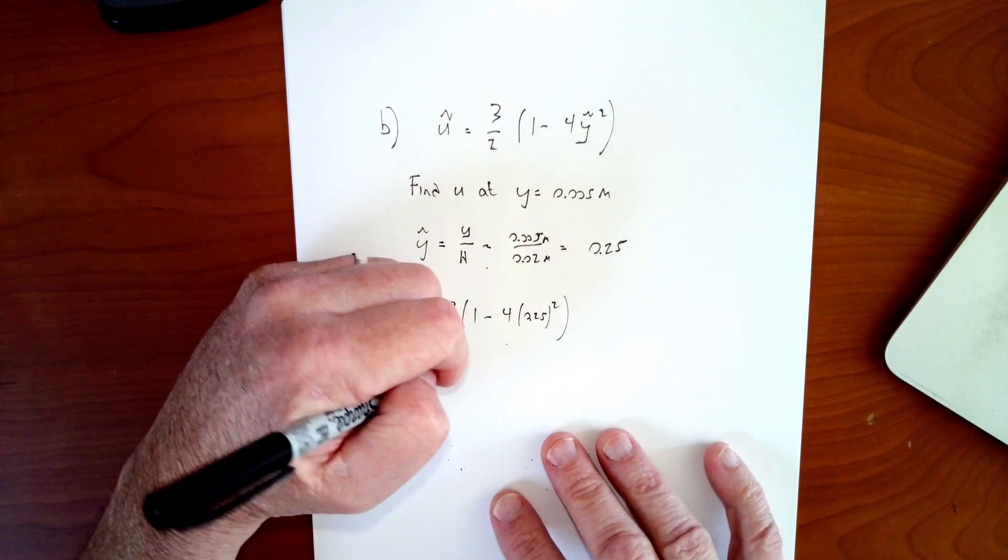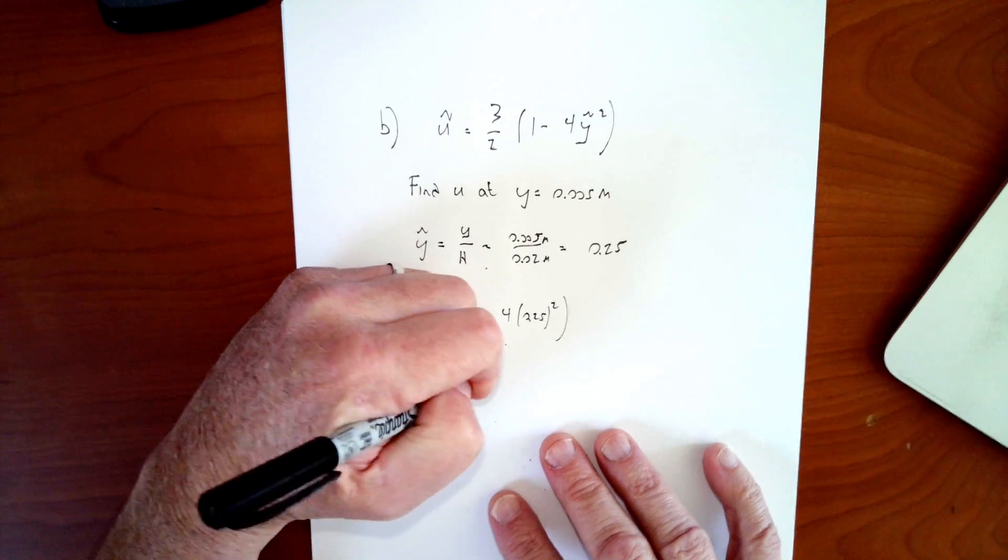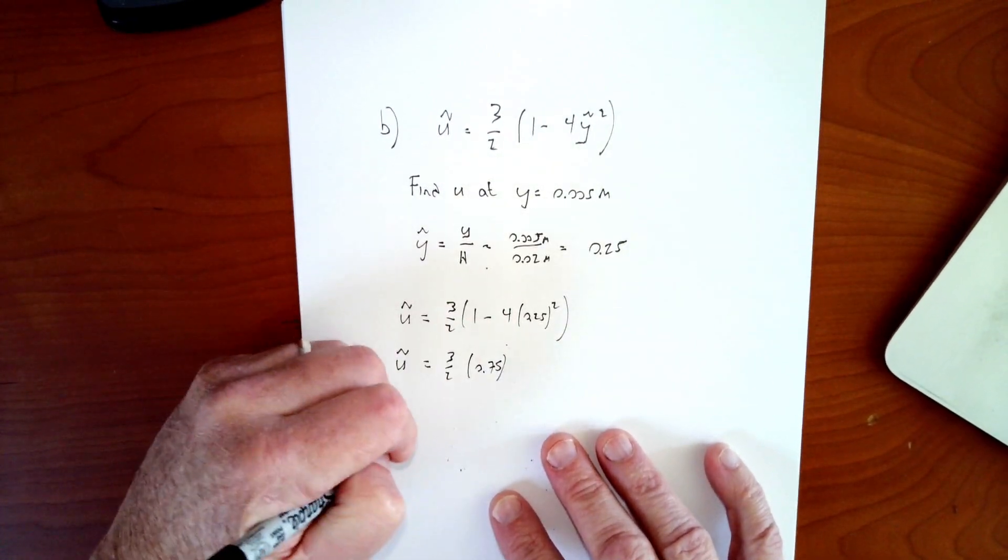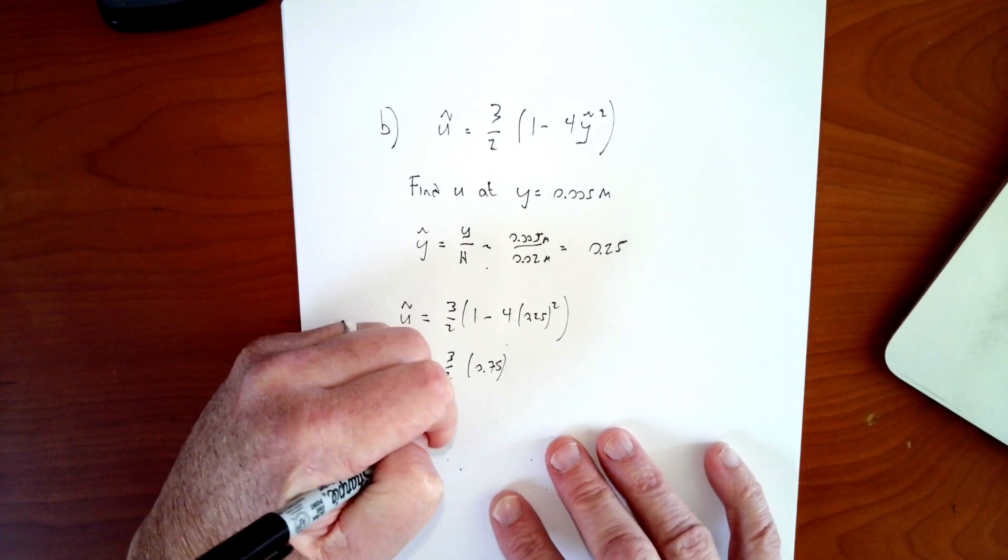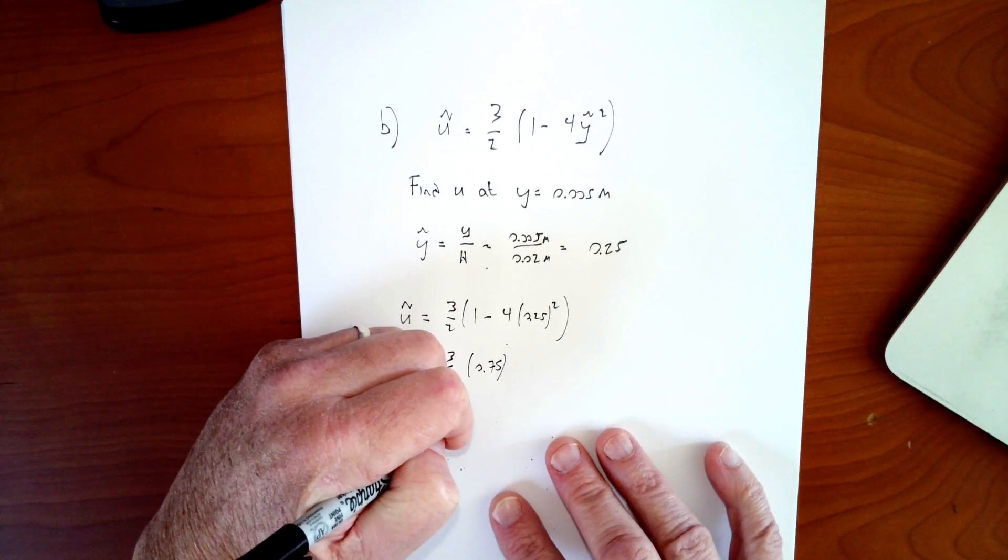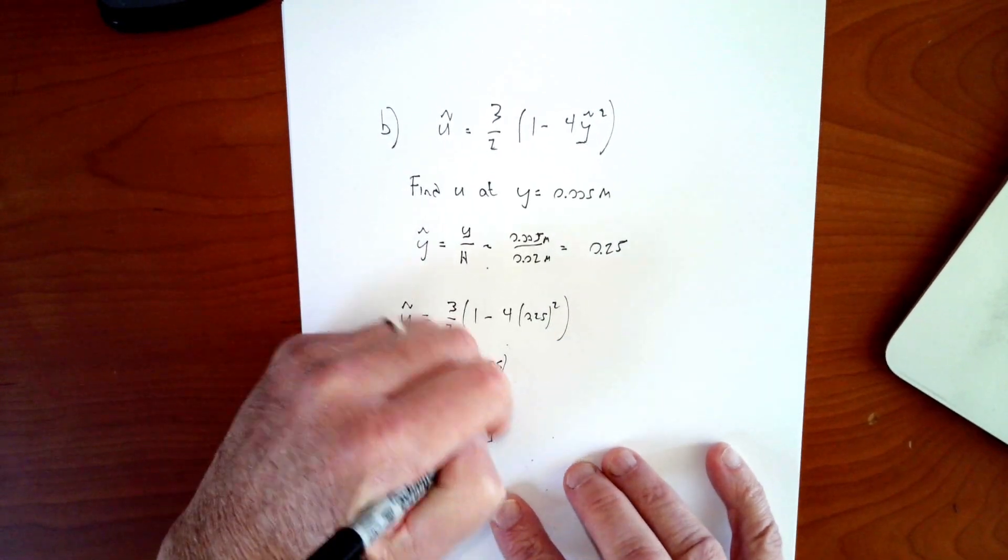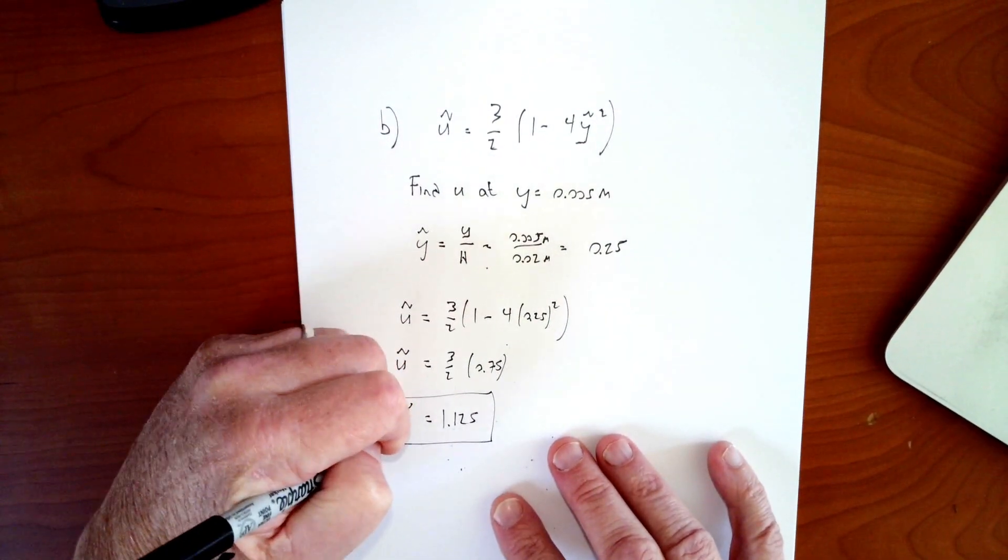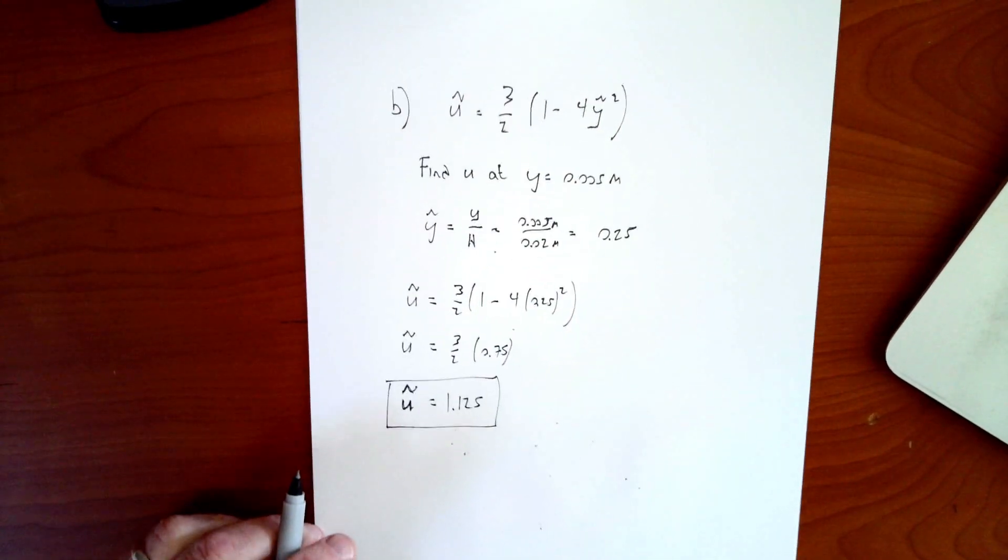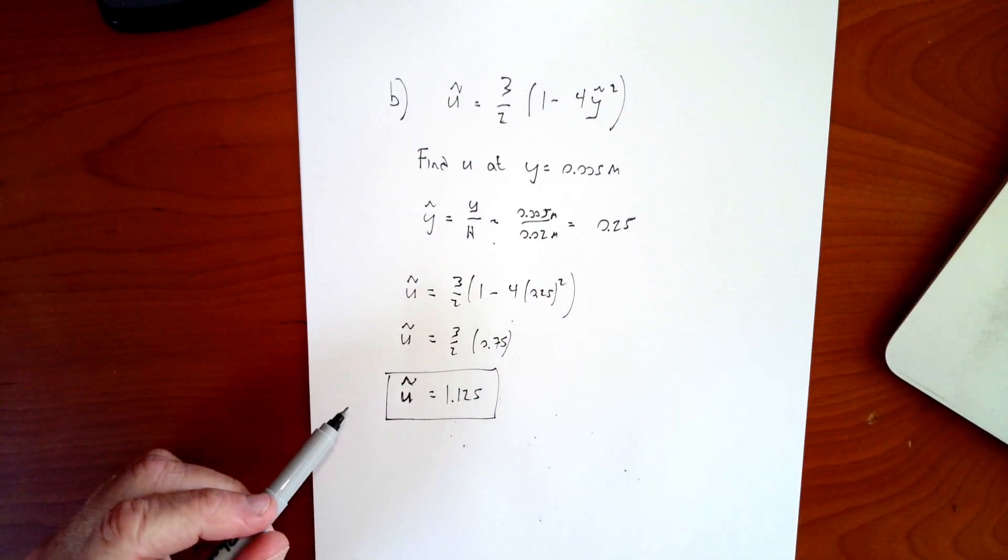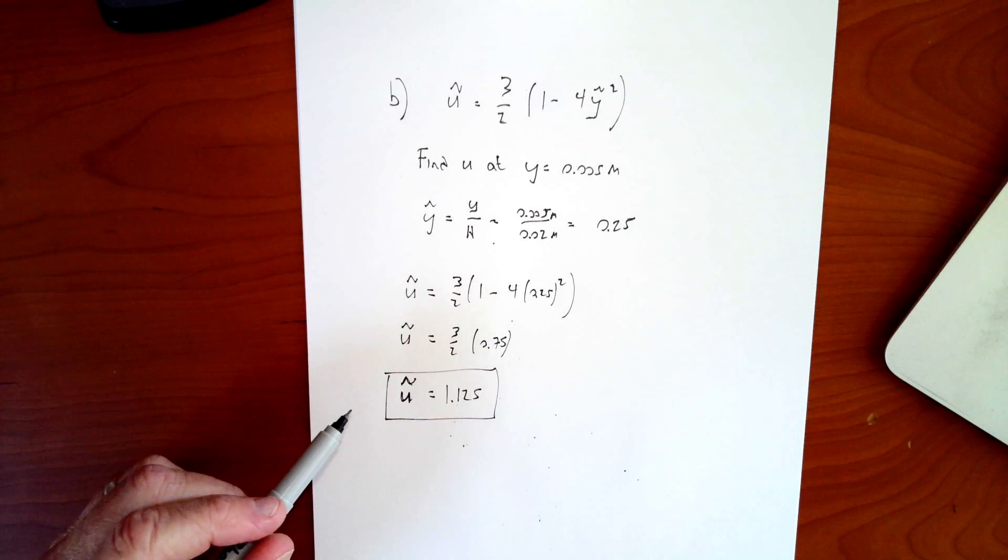Of course, that's equal to 0.75. It turns out times 3 halves. So 3 halves times 0.75. And so u tilde is equal to 1.125 with no units. There are no units because this is a dimensionless value. So we have a dimensionless velocity there of 1.125.